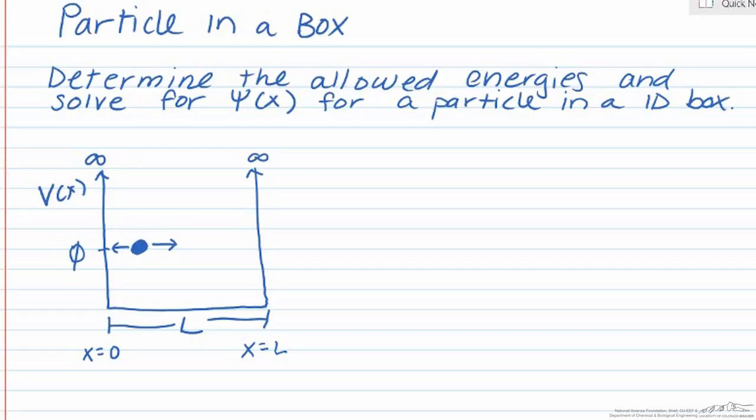Now we know the general solution to the Schrodinger equation for a particle in free motion. And that is psi of x is equal to a sine kx plus b cosine kx. Inside of our box, our particle is free to move around, and so the general solution to the Schrodinger equation is valid.